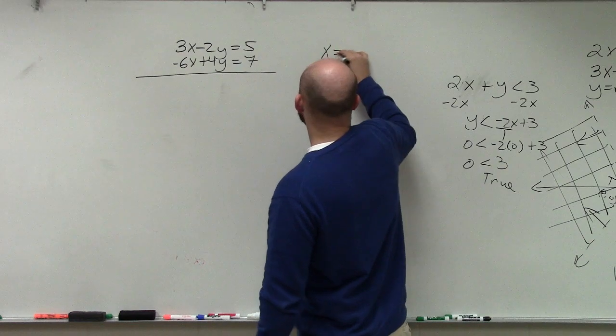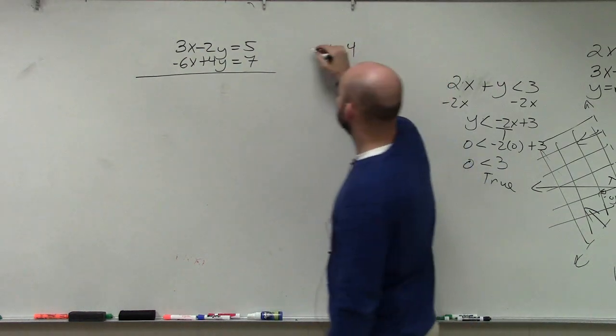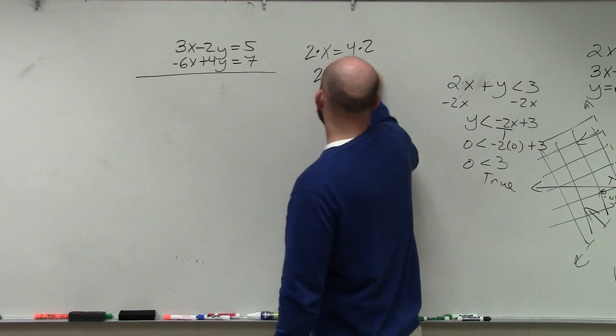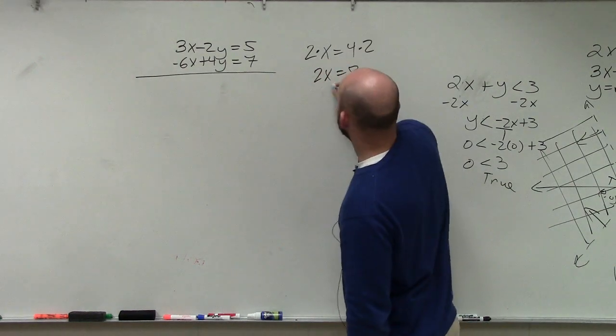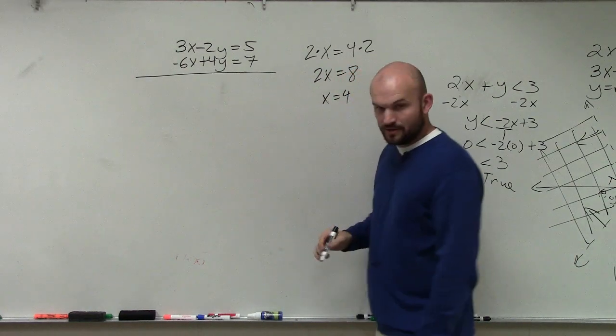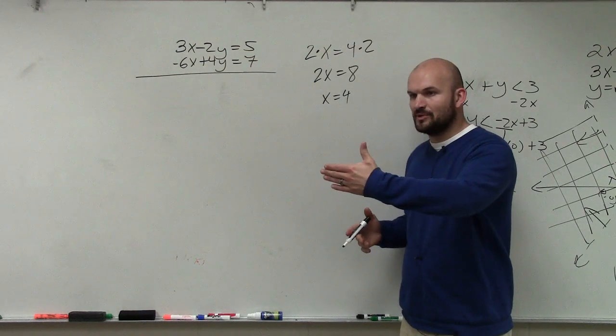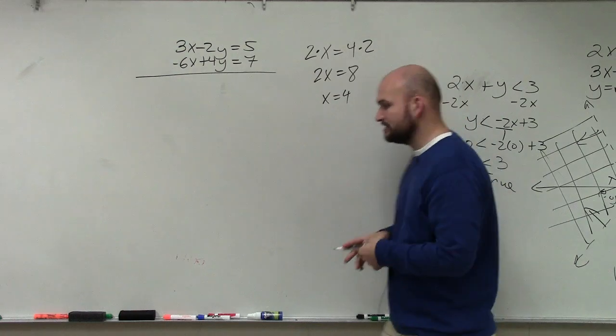For instance, x equals 4. If I multiply by 2 on both sides, I get 2x equals 8. Is 2x equals 8 still the same thing as x equals 4? Yes. So as long as I multiply the whole equation by a number, I have equivalent equations.